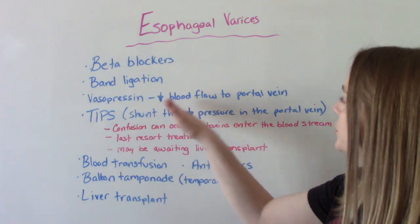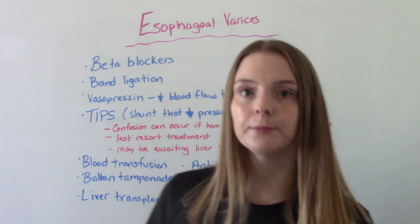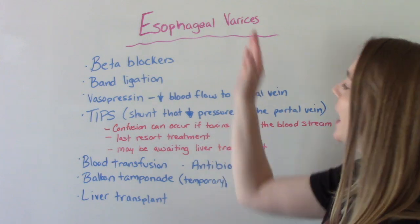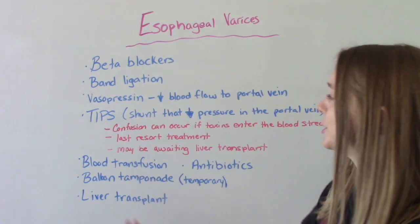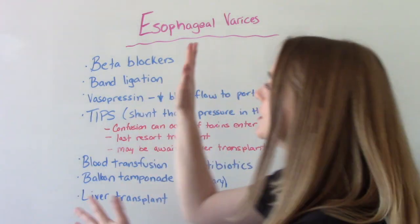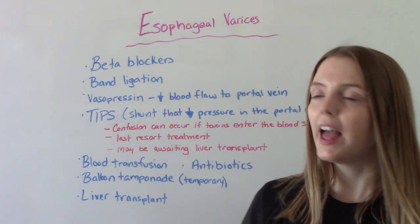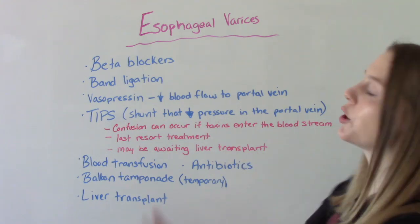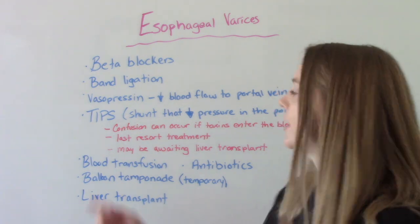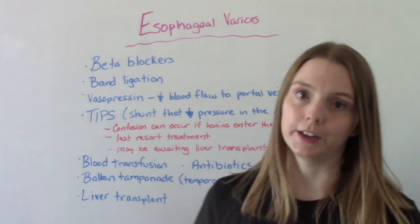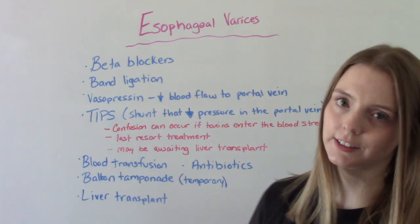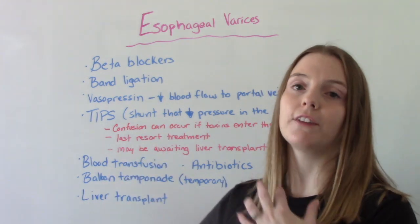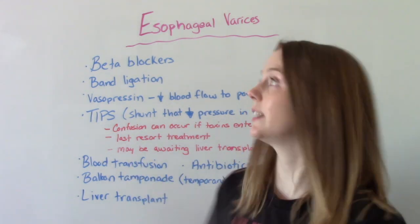They might give vasopressin, which helps reduce blood flow to the portal vein to reduce pressure in that area. The TIPS procedure — when you think about cirrhosis and portal hypertension and esophageal varices, you think about TIPS — but it is used as a last resort. In this procedure, they create a shunt that decreases pressure in the portal vein by routing blood elsewhere. The big issue is the blood bypasses the liver, so the liver can't filter toxins, and confusion can occur. It's considered last resort after everything else has failed, and is sometimes done temporarily for patients awaiting a liver transplant.